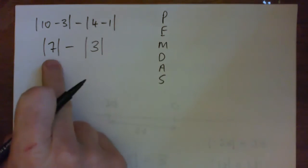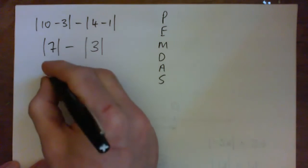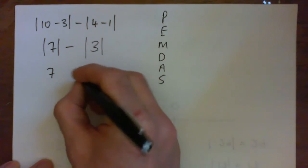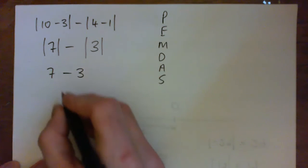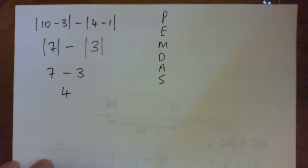Now the absolute value of positive 7 is just 7. The absolute value of 3 is just 3. So now we have 7 minus 3 which is just 4.